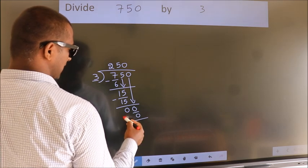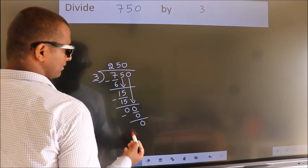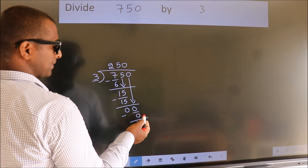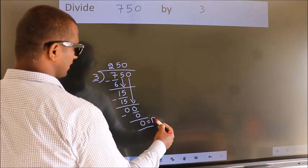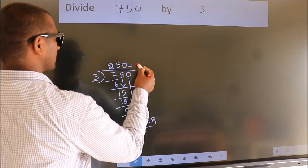Now, we subtract. We get 0. No more numbers to bring down. So, we stop here. This is our remainder. This is our quotient.